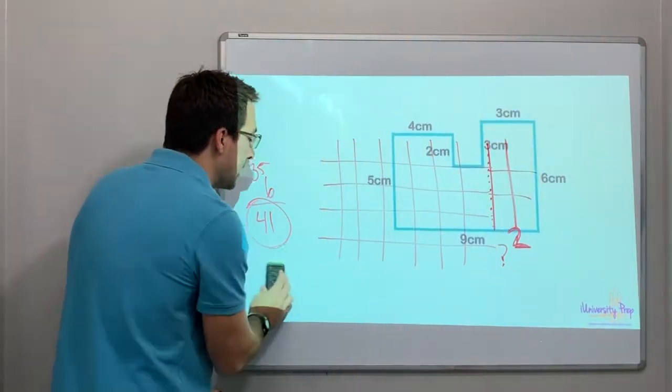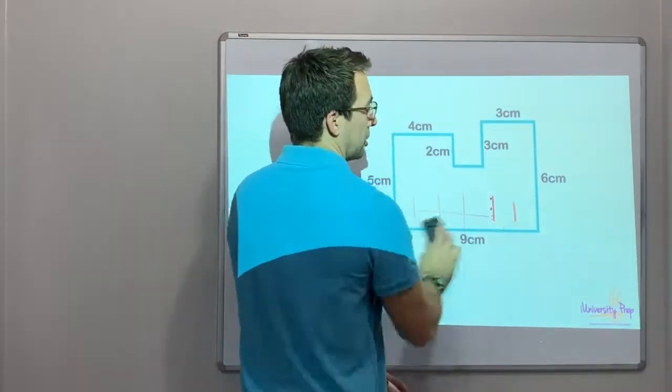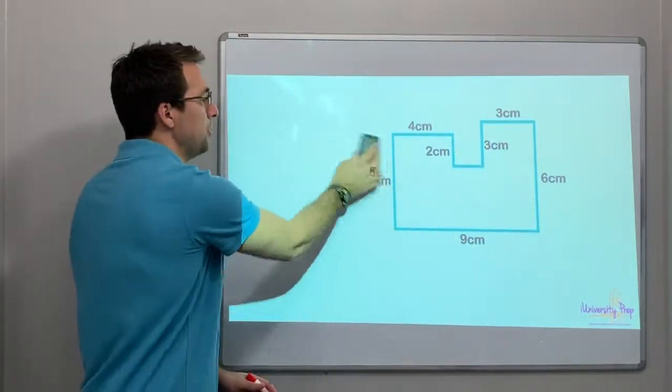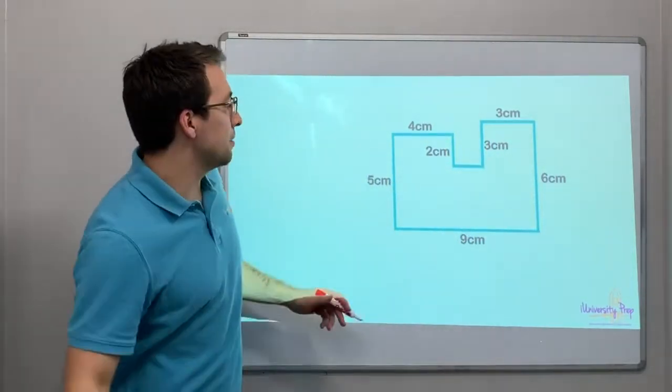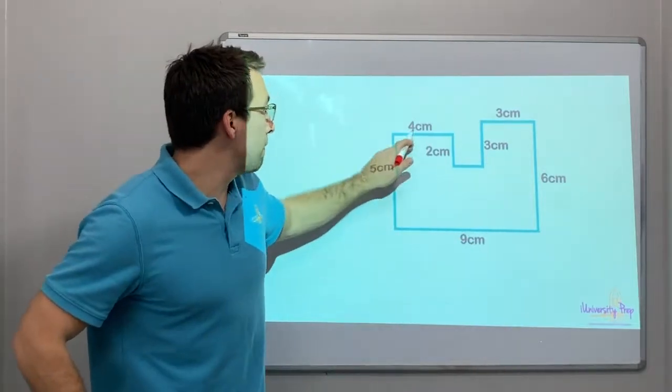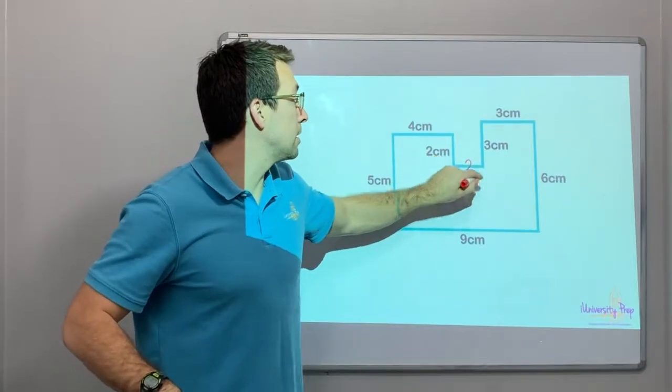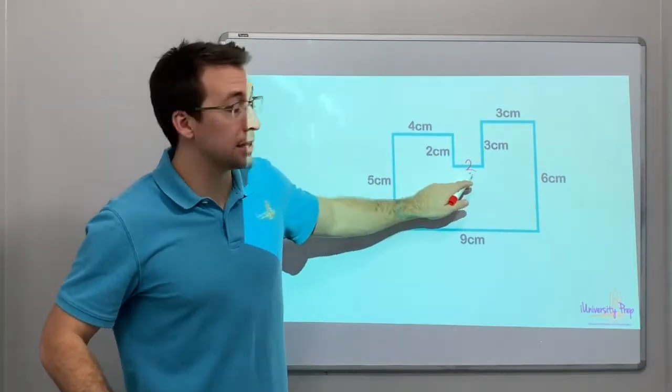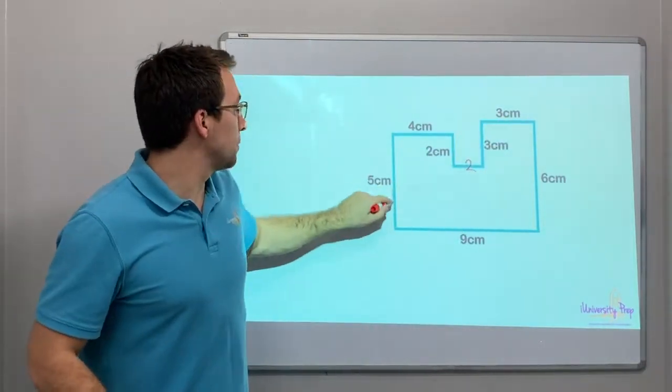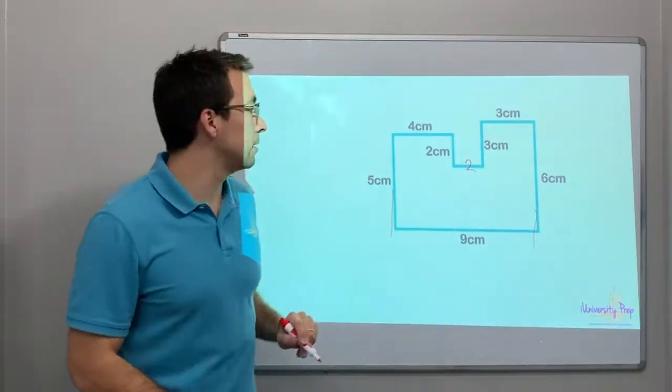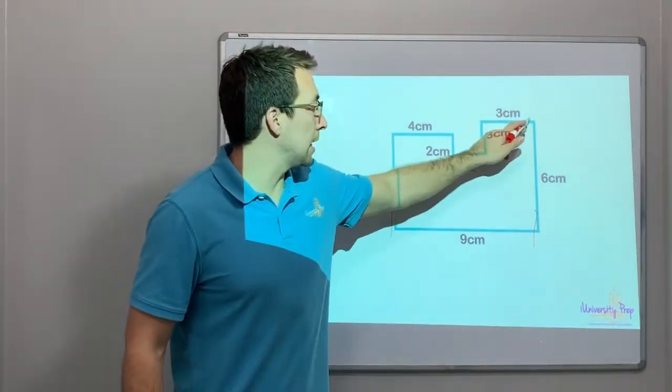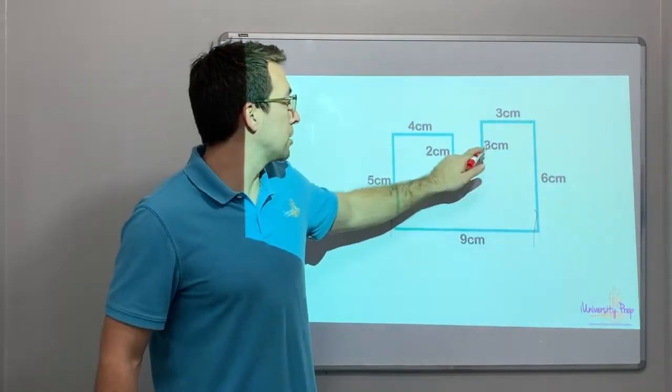So, going again. More irregular shapes. What do we do? Well, let's find some missing measurements. So this is 9. 4 and 3 is 7. So we're missing 2. This is 2. 4 plus 2 is 6. Plus 3 is 9. So from side to side is 9. And this is 6 from top to bottom.